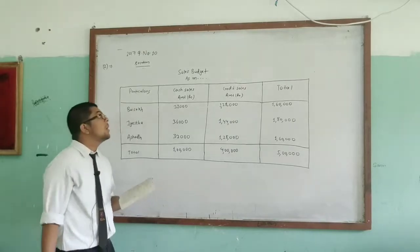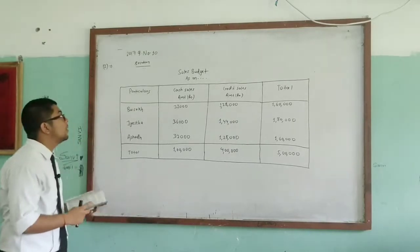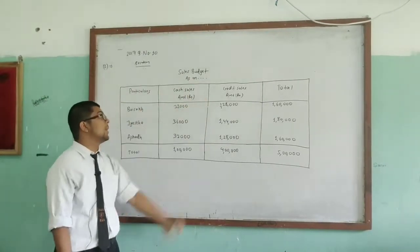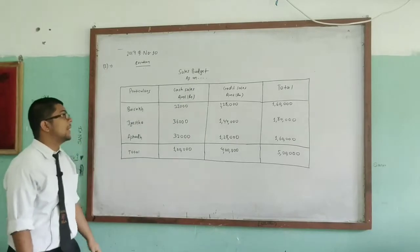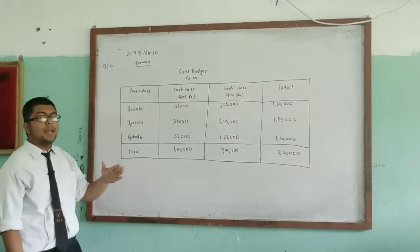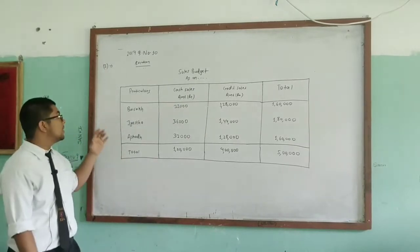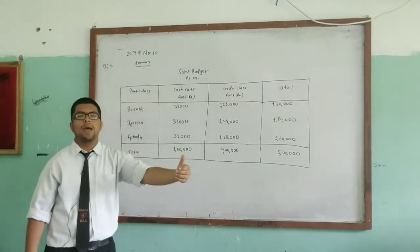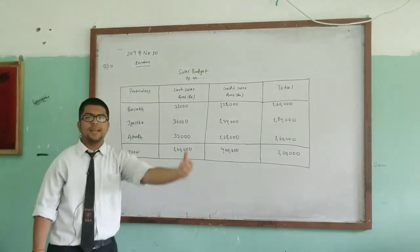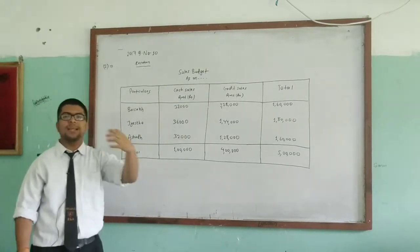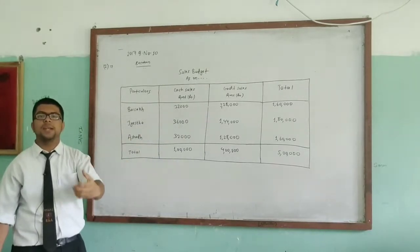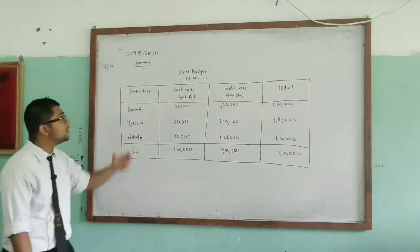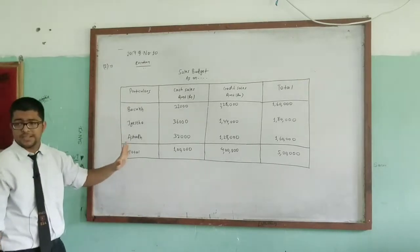Let us focus on this question. It is related to the sales budget. Making a sales budget means estimating and predicting how much total sales will occur, how much will be credit sales, and how much will be cash sales. That is what a sales budget is.